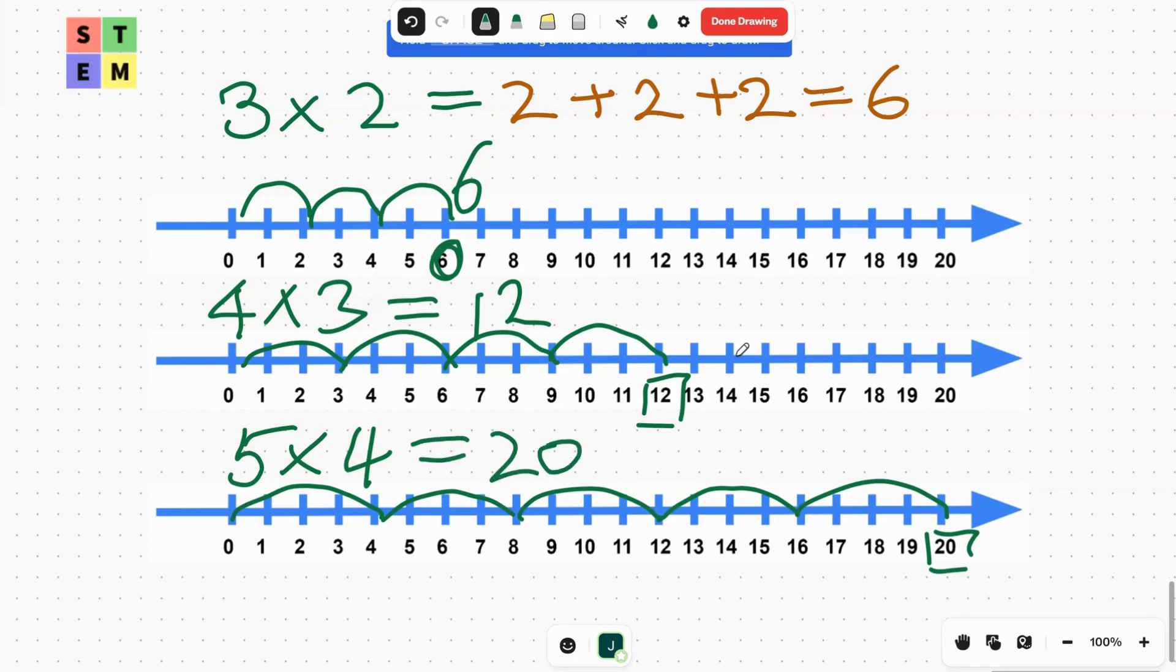What about 4 × 5? Let's switch the two numbers. 4 × 5 is one hop of five, two hops of five, three hops of five, and four hops of five, which also ends up at 20.